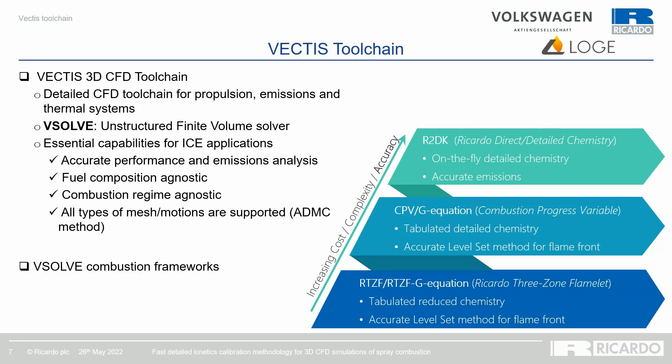Vectis supports all types of meshes and motions thanks to its arbitrary dynamic mesh cut-cell method. Three combustion frameworks are available, in increasing order of cost, complexity, and accuracy: the Ricardo 3-zone Flamelet relying on reduced tabulated chemistry, the Combustion Progress Variable or CPV framework relying on tabulated detailed kinetics, and the R2DK Ricardo Direct Detail Kinetics that uses on-the-fly detailed chemistry calculations.